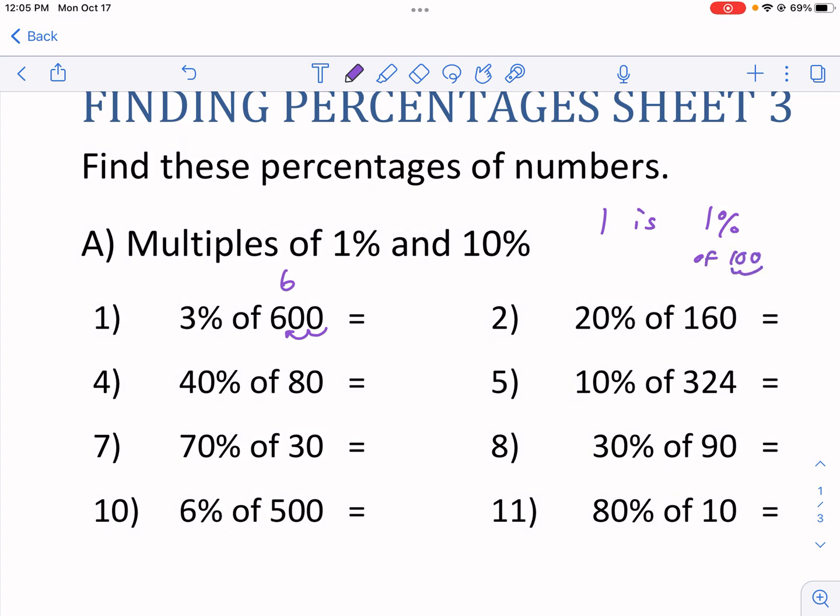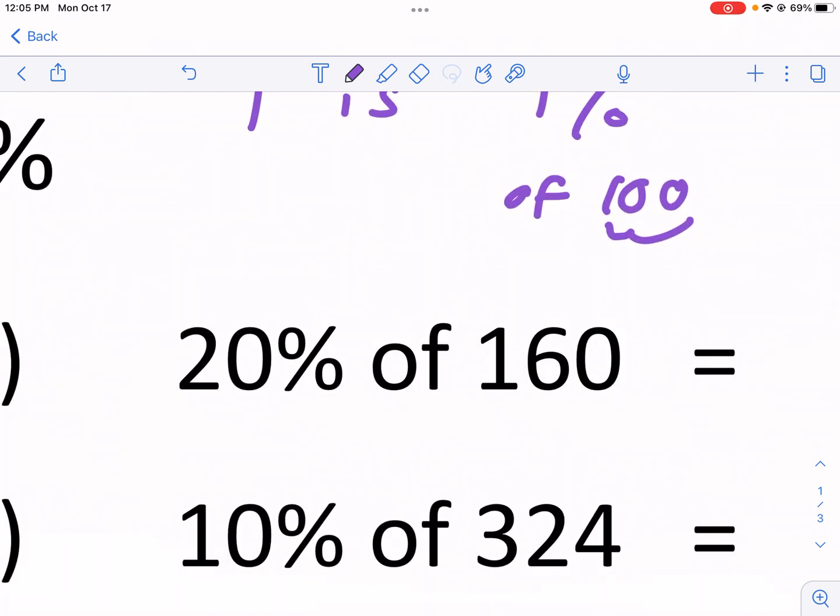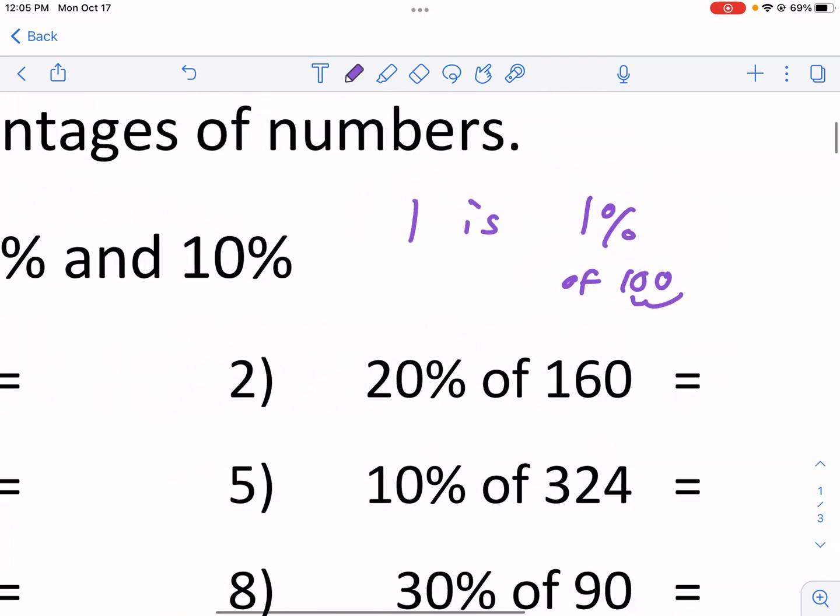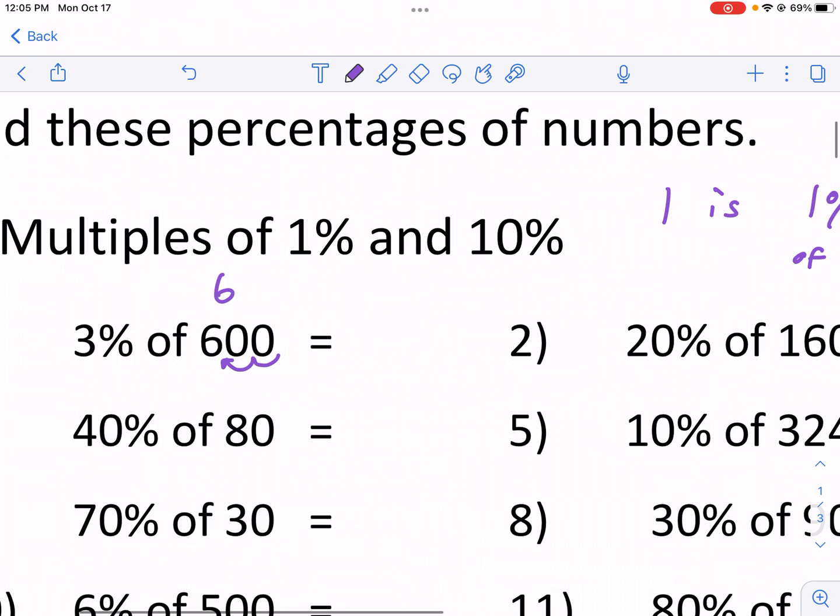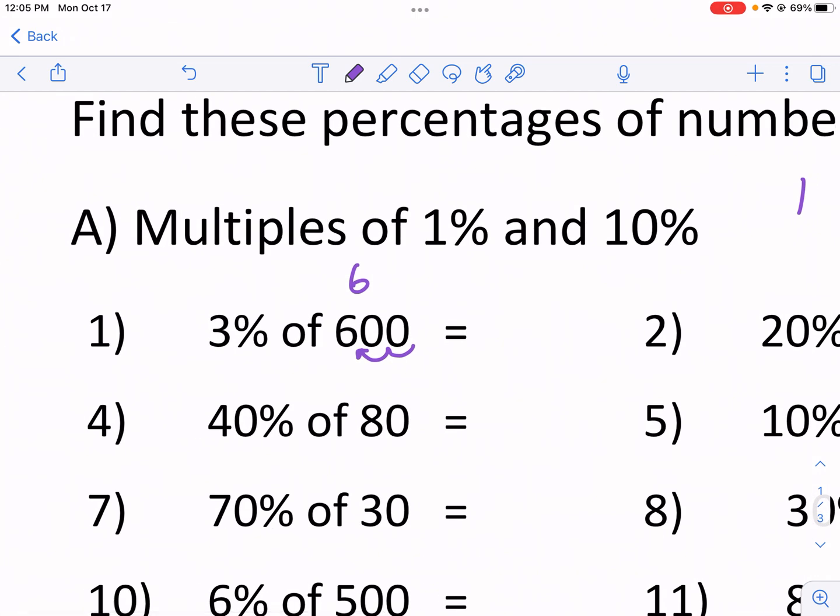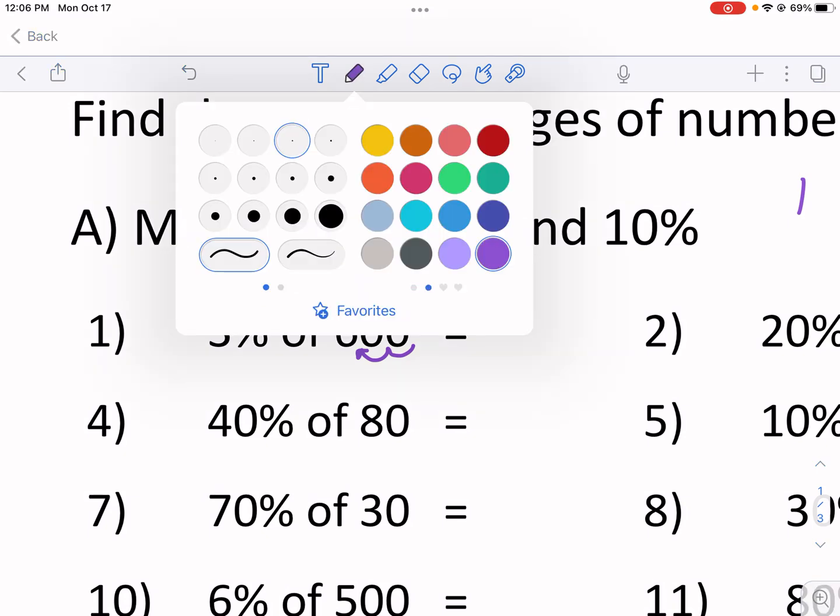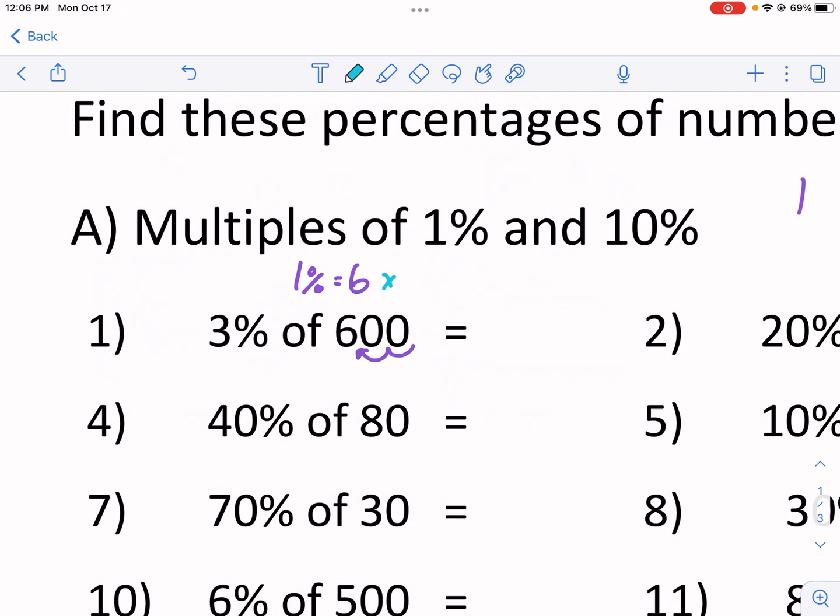So if I move that decimal place two times over that's just 1. So 6 is 1% of 600. Now again I'm not looking for 1% I'm looking for 3% so guess what I need to do. I need to multiply this by 3 because I have to multiply 1 by 3 to get to 3%. So I do the same thing by 6 and I'm going to get 18. So that's one way.